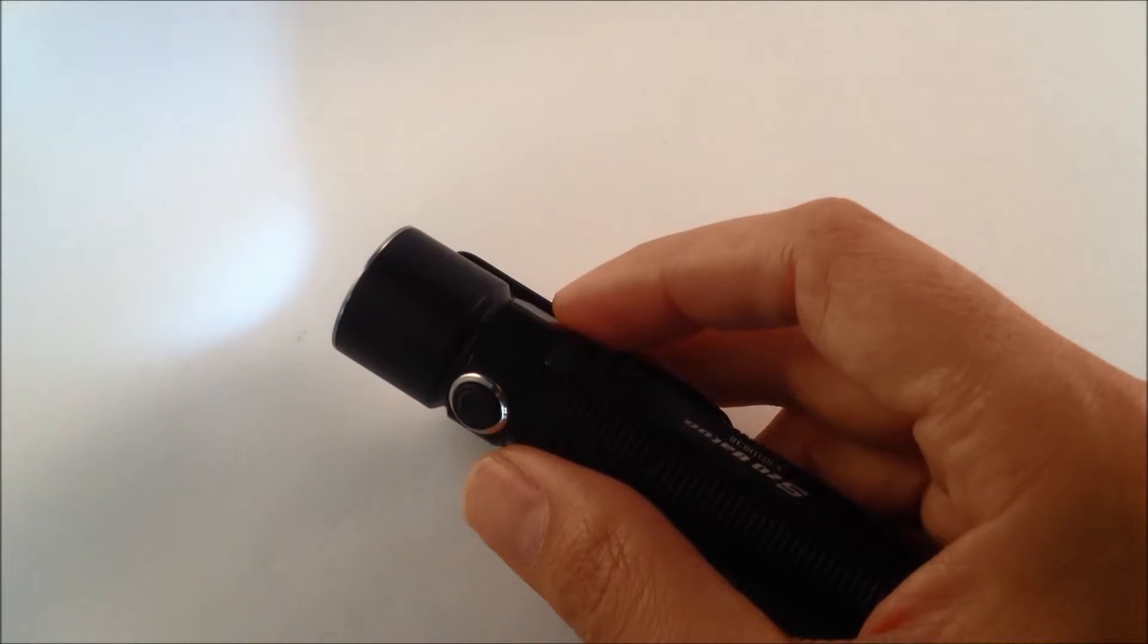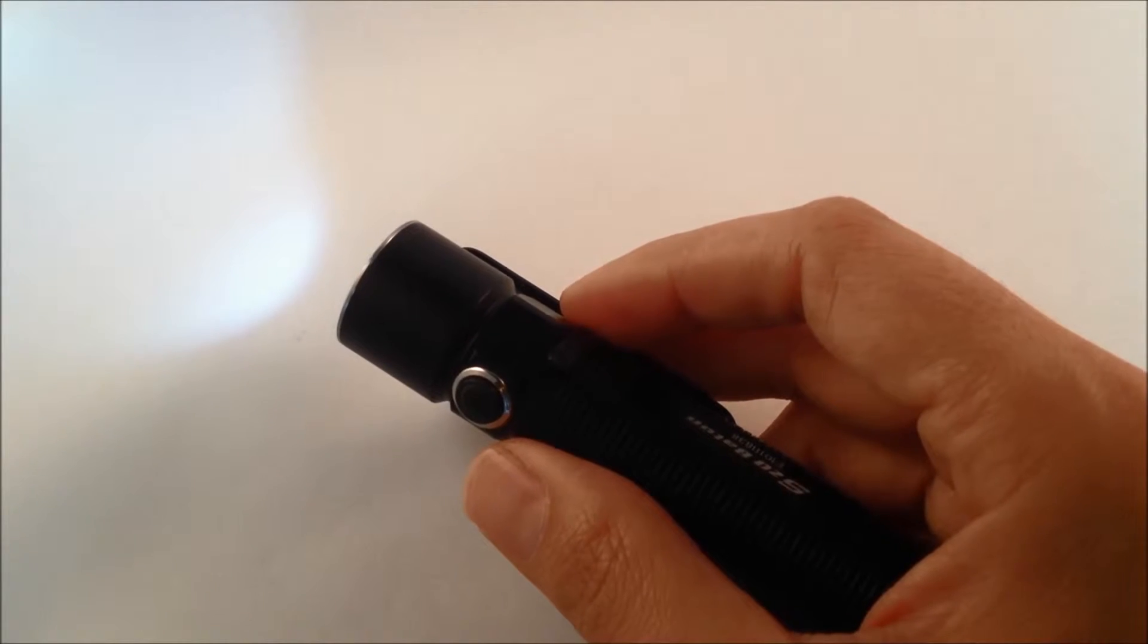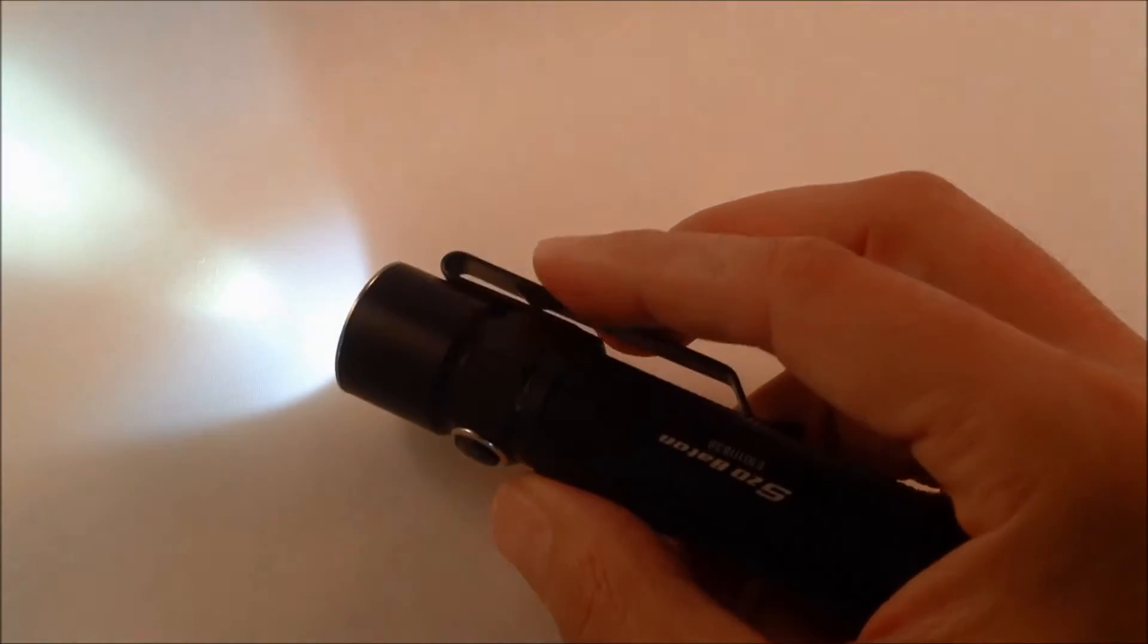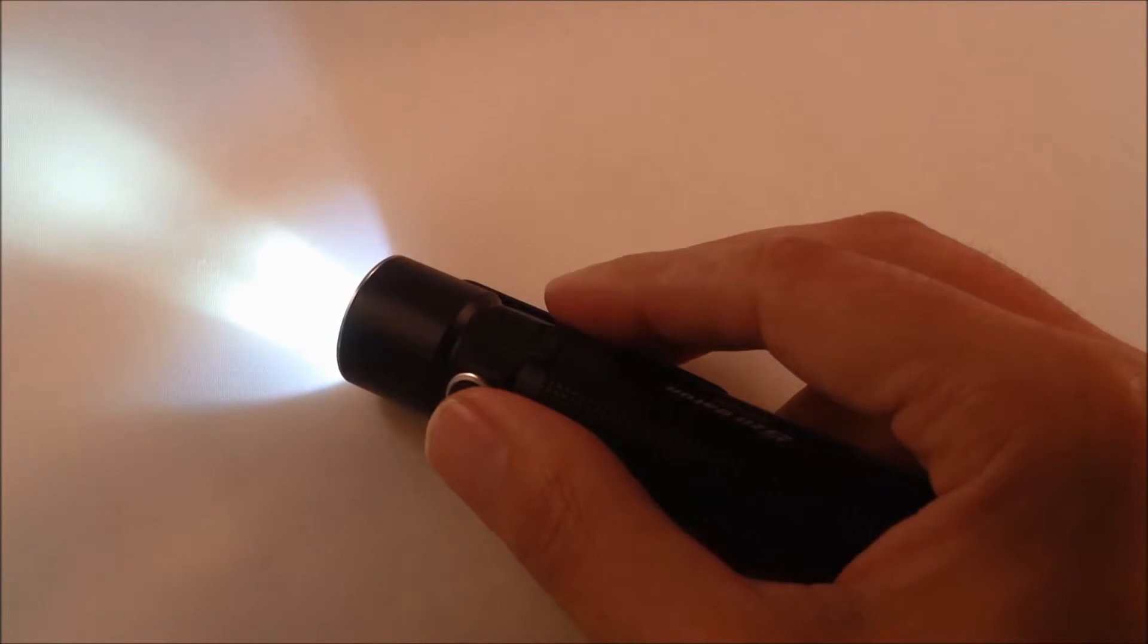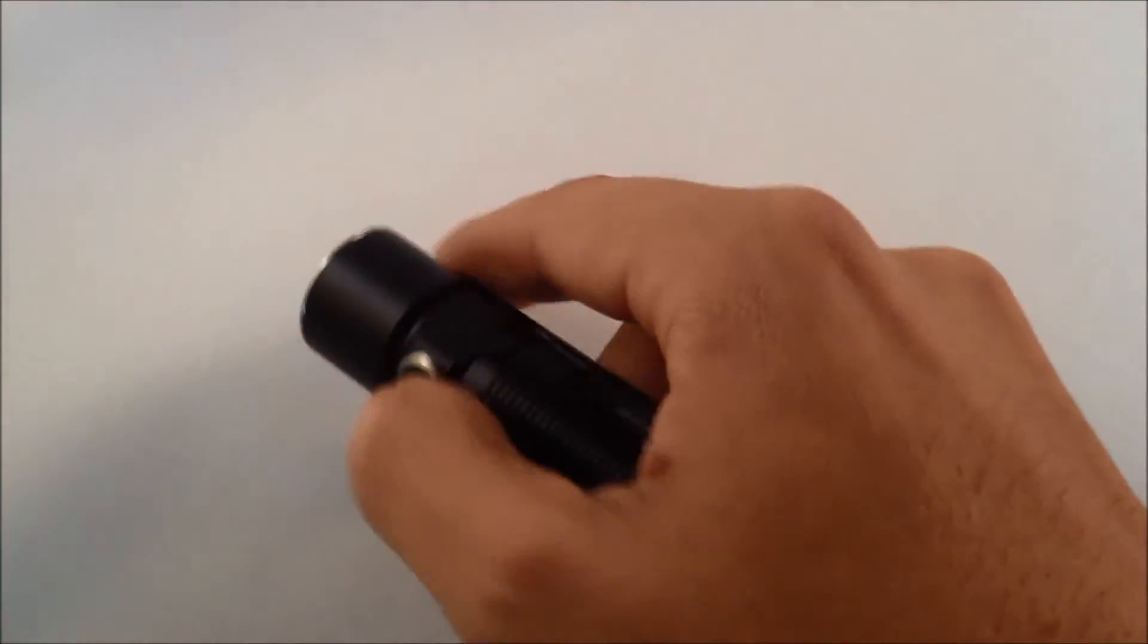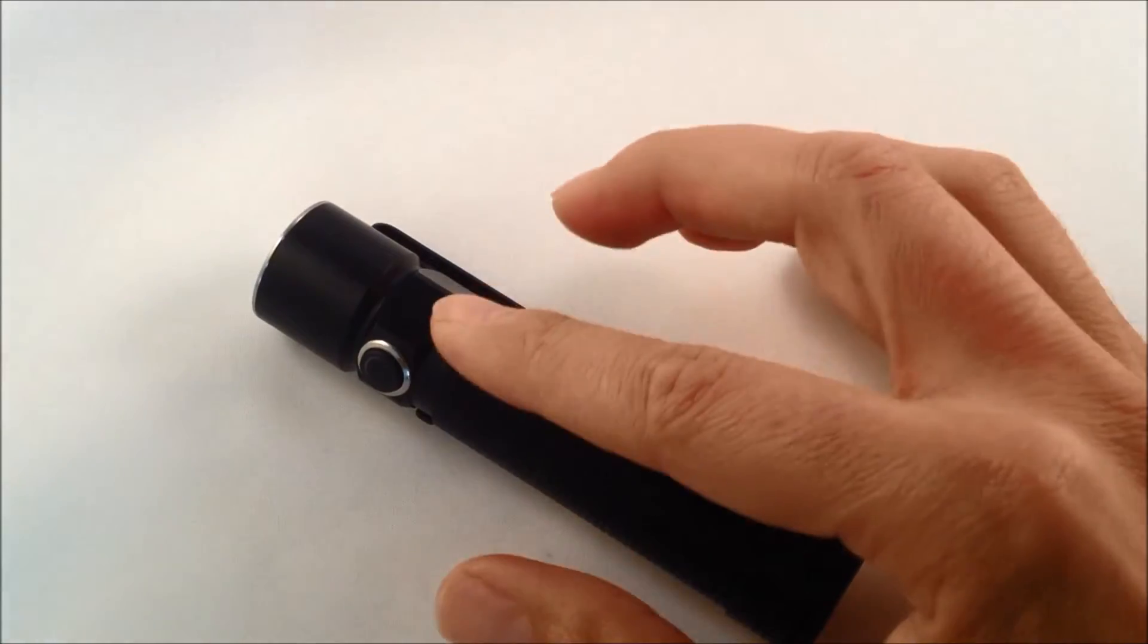A unique aspect of this particular model is it actually does have a strobe feature. I'm going to turn it on just momentarily, but I just kind of want to pre-warn as it does get a little bright on the video camera. You're able to access this by simply double-clicking the side switch here. So if I double-click it, you'll see I just wanted to turn it off because it was pretty bright.